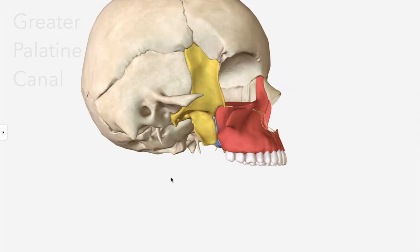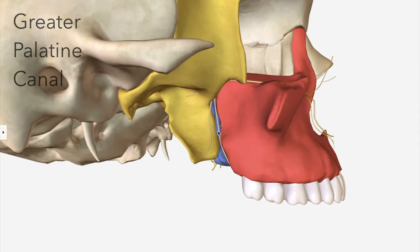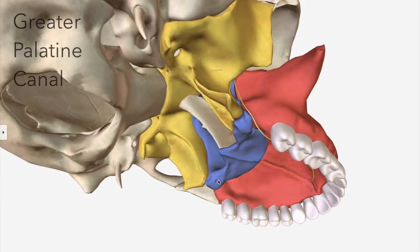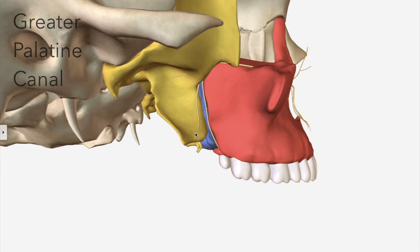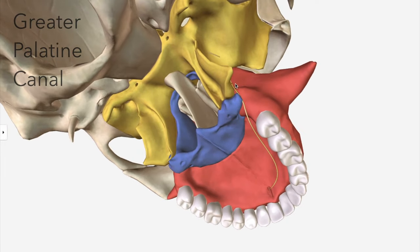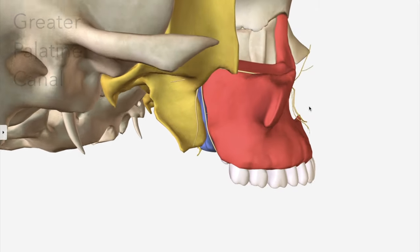Lastly, the greater palatine canal communicates with the oral cavity. So passing through the greater palatine canal, into the oral cavity, go the descending palatine artery and the greater and lesser palatine nerves.